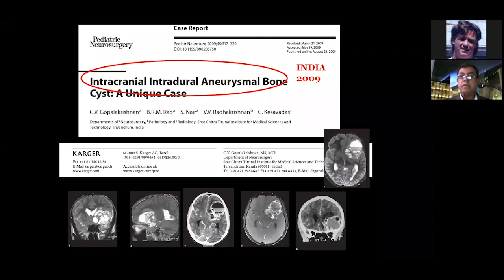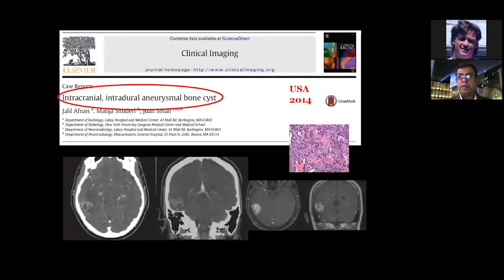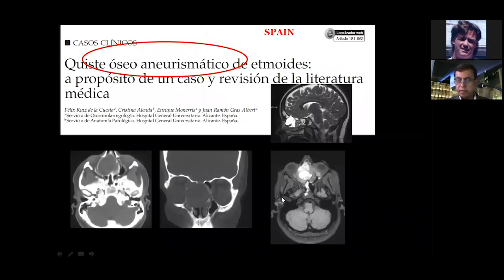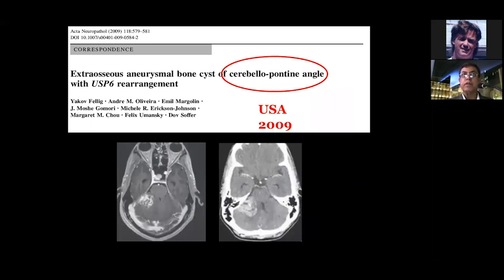Can it occur completely inside the skull and not attached to the skull — totally inside the brain? Yes: intracranial intradural aneurysmal bone cysts. It can also affect the petrous bone, with considerable destruction. Cases involving the ethmoid and jugular foramen are described; in the jugular foramen cases, most people would think of glomus jugulare. The cerebellopontine angle is also a rare differential diagnosis.